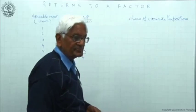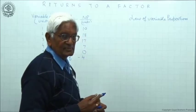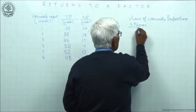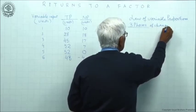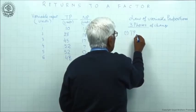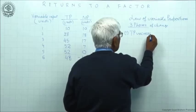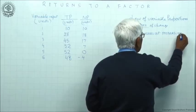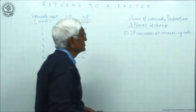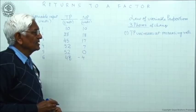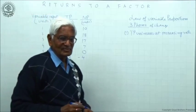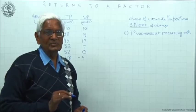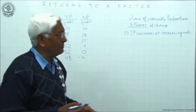The law is that there are three phases of change. One phase: TP increases at increasing rate. Rate means MP. If one unit increases, how much addition will occur - that is the rate and that is also MP. So we can also express this phase as MP increases.